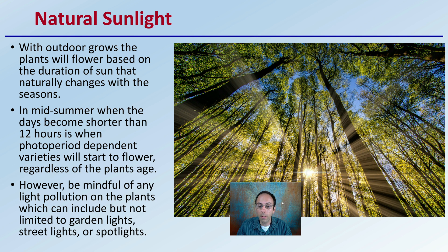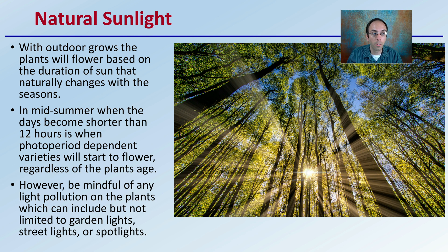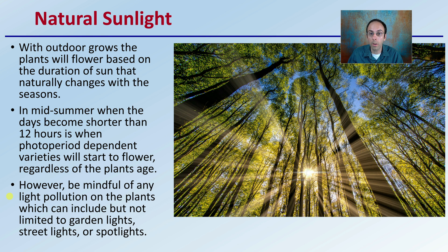First off, we have to consider the photoperiod, which comes from the natural sunlight. With outdoor growers, plants will flower based on the duration of sun that naturally changes with the seasons. In midsummer, when days become shorter than 12 hours, is when photoperiod-dependent varieties will start to flower, regardless of the plant's age. However, be mindful of any light pollution on the plants, which can include garden lights, streetlights, or various spotlights that might offset the plant's natural perception of the photoperiod.